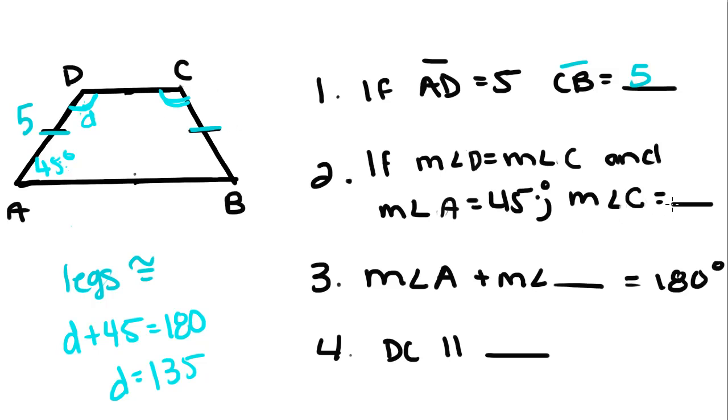So that means C also equals 135 degrees. If the measure of angle A plus the measure of angle C equals 180, well, we just did that right here. So the measure of angle D. DC is parallel to AB, because these two lines will never intersect.